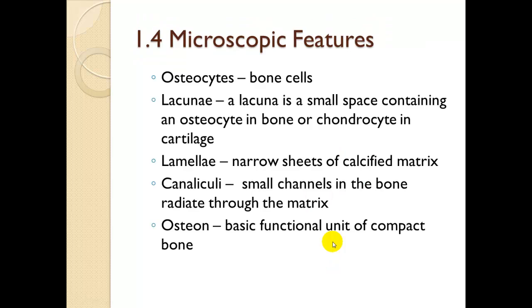Microscopic features: osteocytes are bone cells. Lacunae are small spaces containing an osteocyte in bone, or a chondrocyte in cartilage. Chondrocytes are more specialized bone cells that provide padding so there's no stress between bones. A lamella consists of narrow sheets of calcified matrix. Canaliculi are small channels in the bone that radiate through the matrix — multiple channels that allow the bone to communicate and provide blood supply. An osteon is the basic functional unit of compact bone.